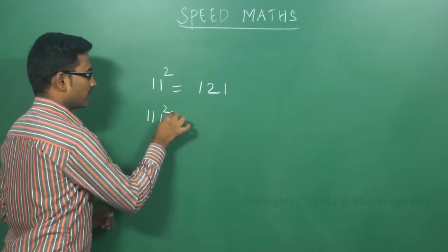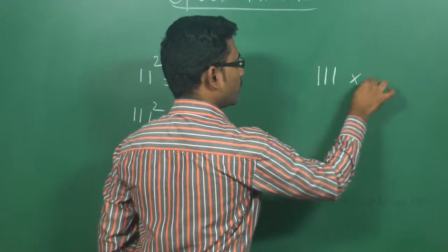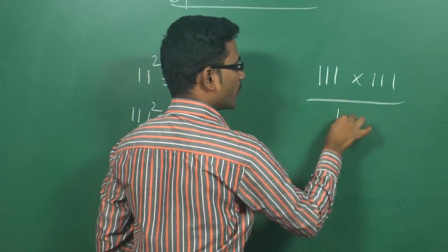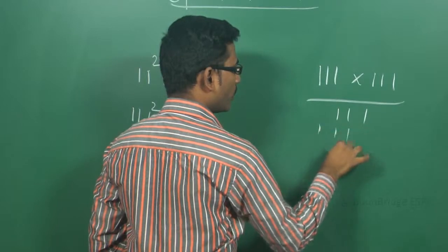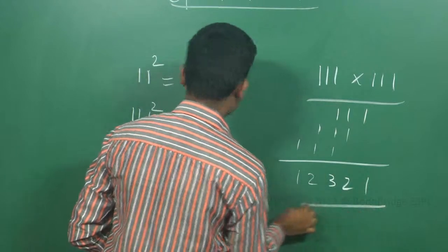111 square. How you will calculate 111 into 111? So 1, 2, 3, 2, 1—this will be the result.